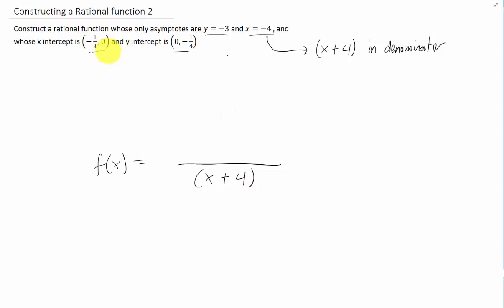Now how do we get an x intercept? Well the x intercepts are typically going to come from the numerator. You can look at the last video for a little bit more of a description. But the point negative 1 third 0 is going to appear on a function if somewhere in the function in the numerator there is a factor of x plus 1 third.